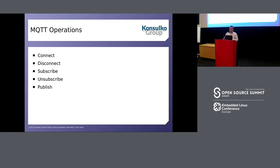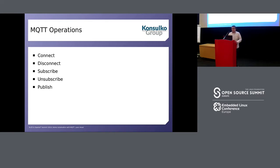MQTT has several important operations. Connect — obviously the first thing any client has to do is connect to the broker. When you connect something, you should have the option to disconnect it, and MQTT has this operation. Subscribe and unsubscribe are at the heart of MQTT because MQTT works with topics. Each message has a topic, and these operations allow your clients to subscribe to certain topics — meaning they'll start receiving messages with those topics — or to unsubscribe. Publish is the operation that allows your client to publish an MQTT message to other interested clients, and the broker is responsible for delivering it.